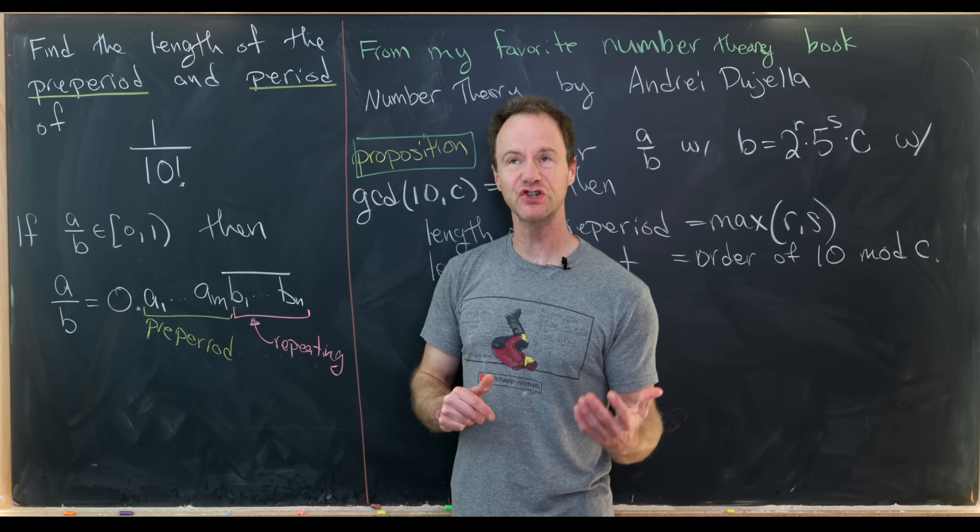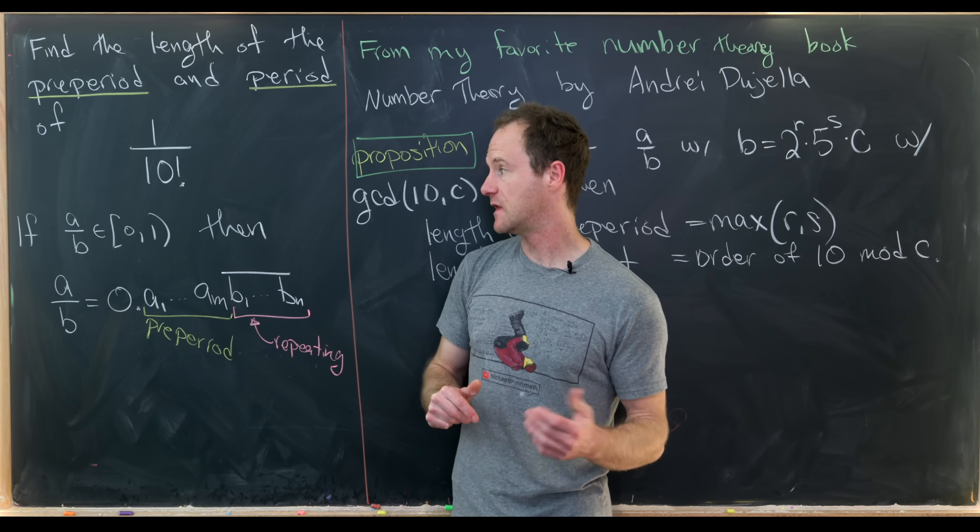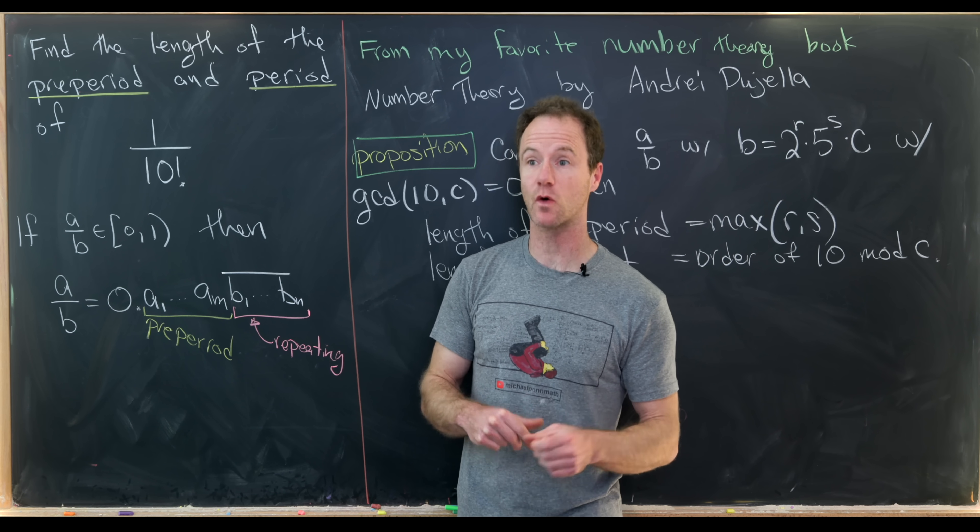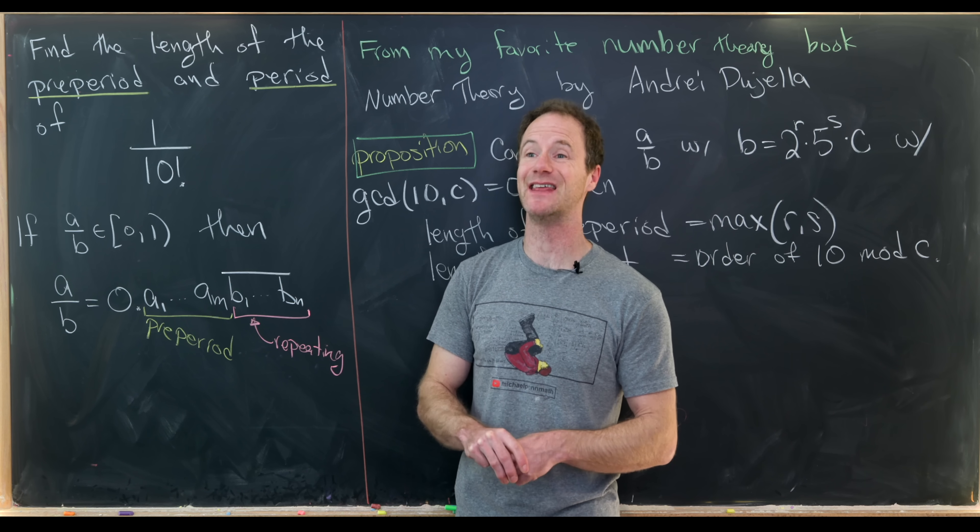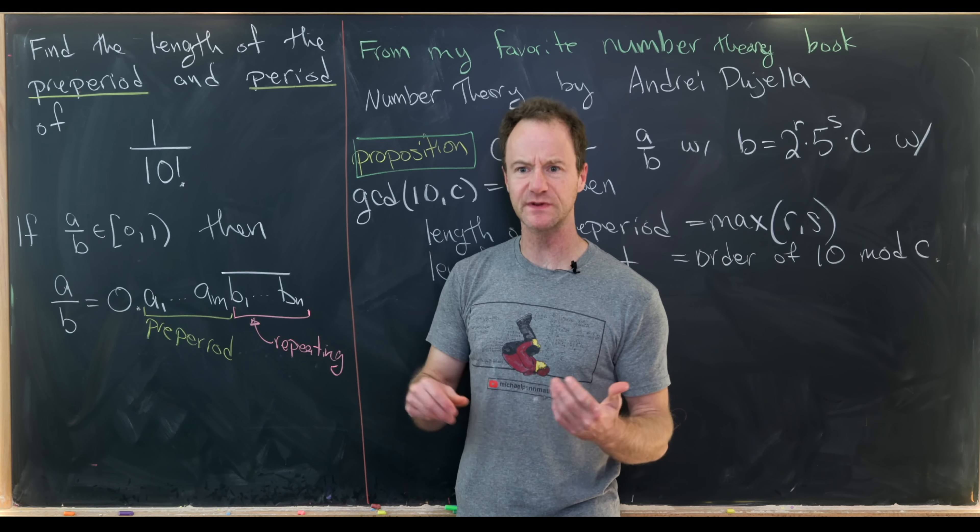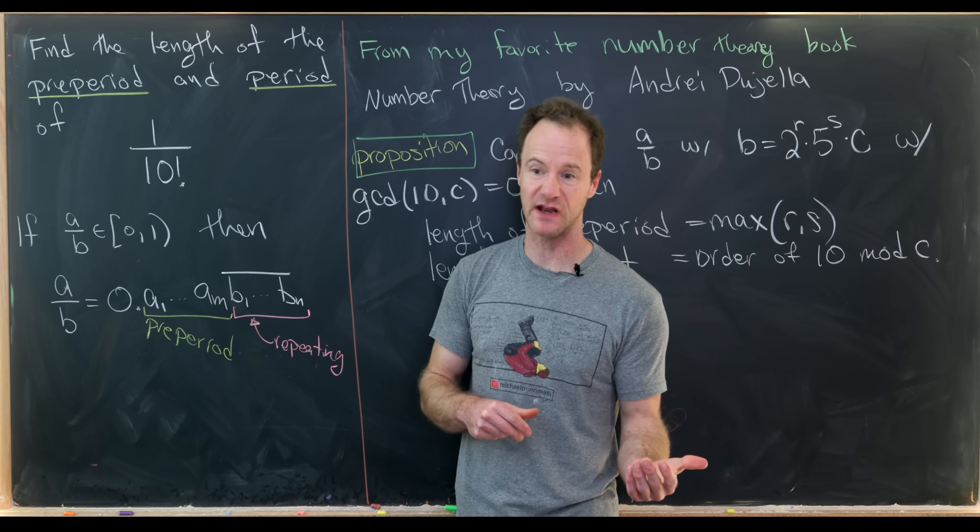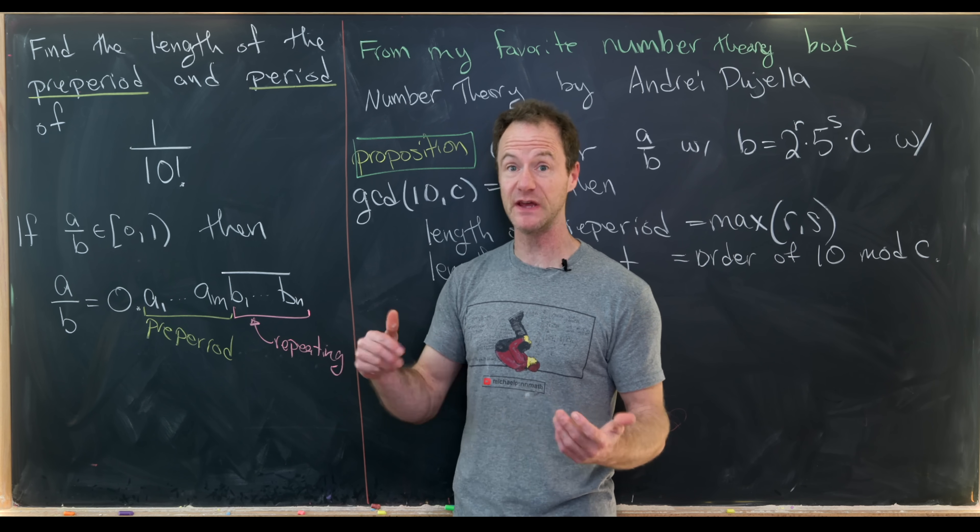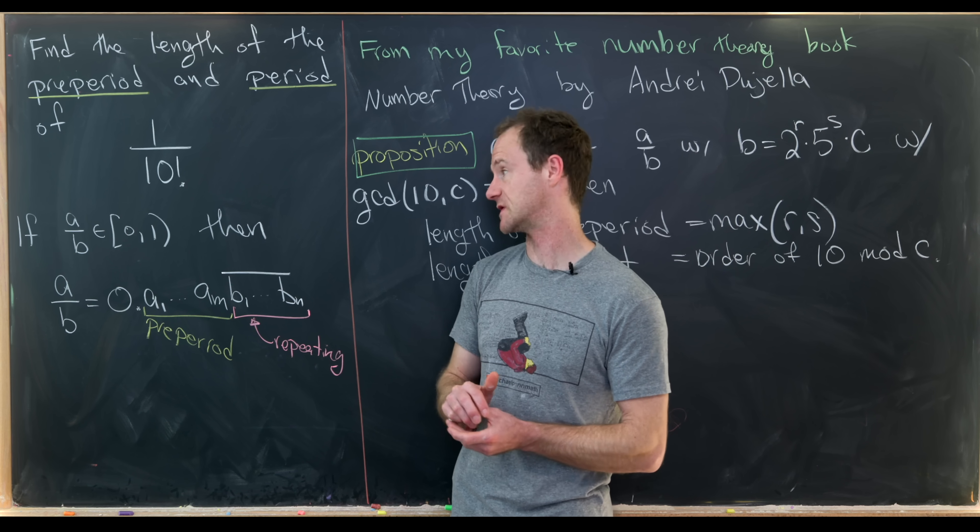So let's just recall first of all that if we have a rational number, then it has a decimal representation that terminates or a decimal representation that eventually repeats. And in fact, the ones with a decimal representation that terminate can be thought of as one of the types that repeats where it just repeats with a bunch of zeros at the end.